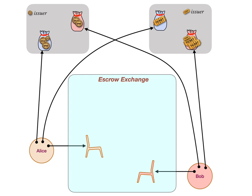Everybody's running this distributed object capability fabric. When Alice, to initiate the trade, sends a message to the escrow exchange saying, 'I'm giving this many bucks in and I want a concert ticket for seat 3F7,' the want line is purely descriptive — it's just conveying information — while the give line is the actual asset. Alice, in sending this message, had to withdraw that asset from her purse and provide it to the escrow exchange, in the same way that in the previous diagrams Alice had transferred an asset by sending a payment purse to Bob. Now she's transferring the asset into the escrow exchange.